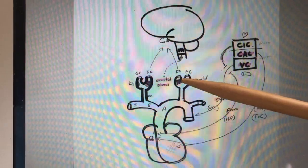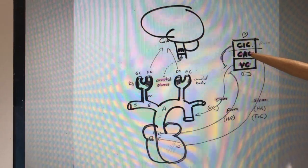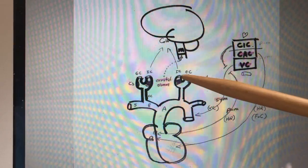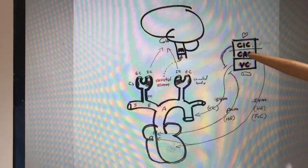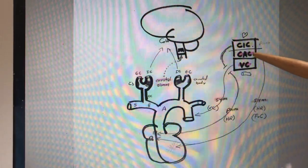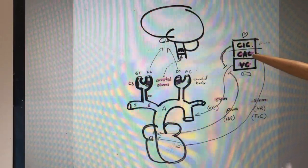Also, signals are going from the carotid sinus to the CAC, the cardiac acceleratory center. If the blood pressure is too high, the CAC will respond by sending less sympathetic signals to the heart, to the SA node and AV node, and less signals to the cardiac muscle.